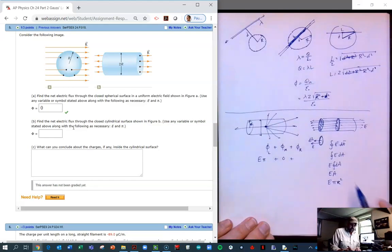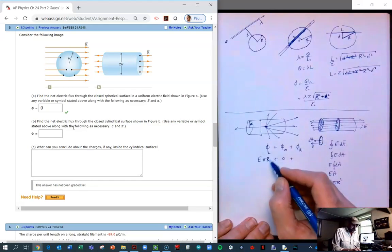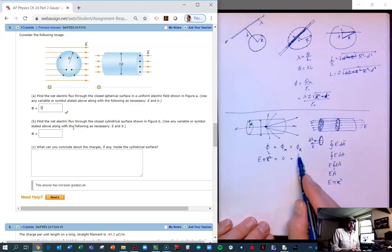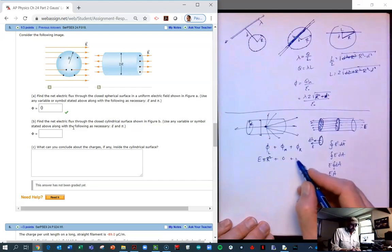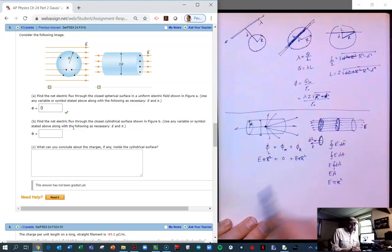Oh, big R squared, sorry, because that's how it's defined. And then what is the flux of the right side? Well, it's going to be exactly the same. It's the same electric field E, and it's the same area.